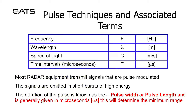Pulse techniques and associated terms. Frequency F in hertz; wavelength lambda in meters; speed of light C in meters per second; time intervals, typically in microseconds. Most radar equipment transmits signals that are pulse modulated — the signals are emitted in short bursts of high energy. The duration of the pulse is known as the pulse width or pulse length, generally given in microseconds, and this will determine the minimum range.